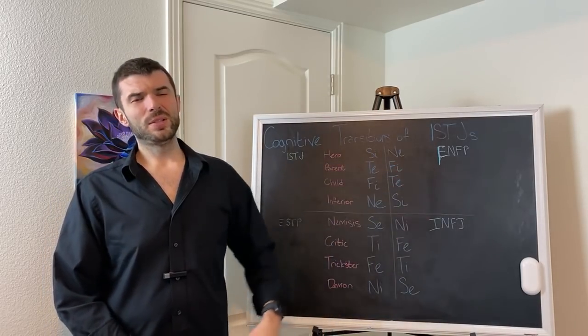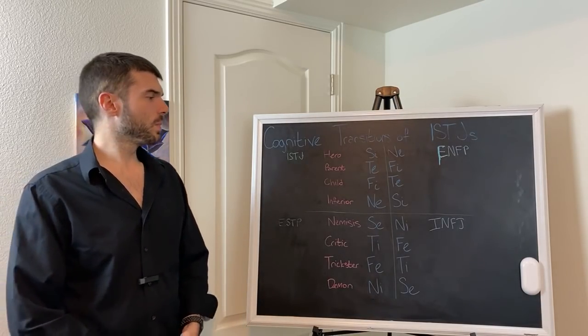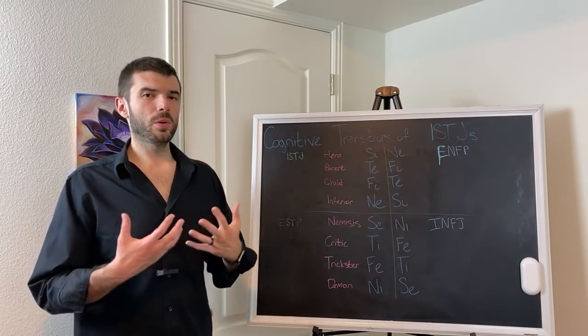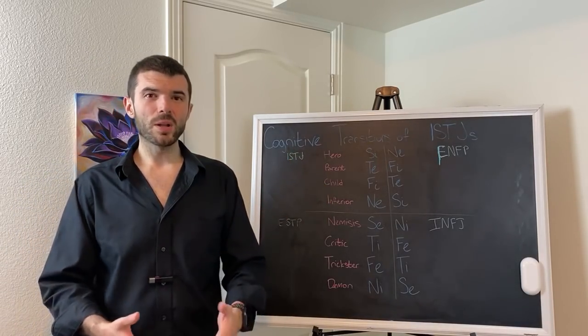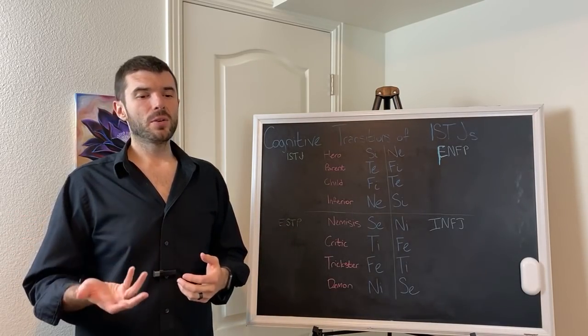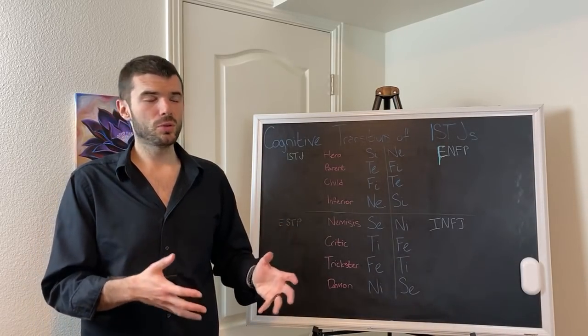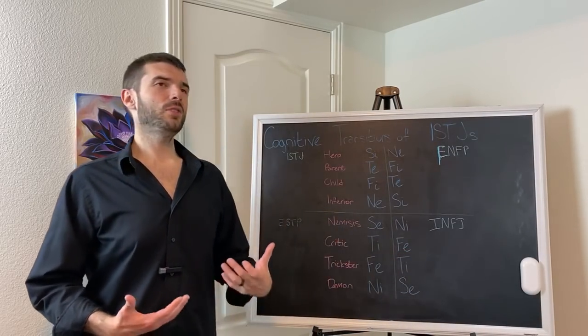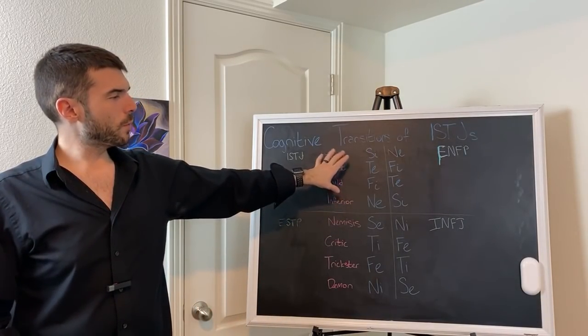Then the inferior function forms third. The inferior function is connected to the hero in an axis. That axis gives the ISTJ the fear of being unwanted. All ISTJs are afraid of being unwanted. They figure by having more status or higher reputation they would become more desirable.